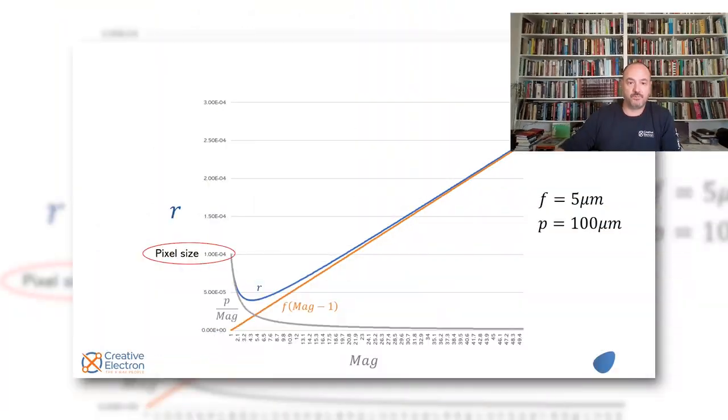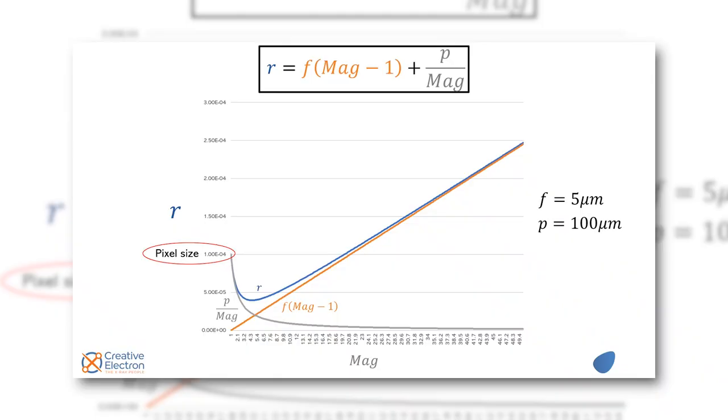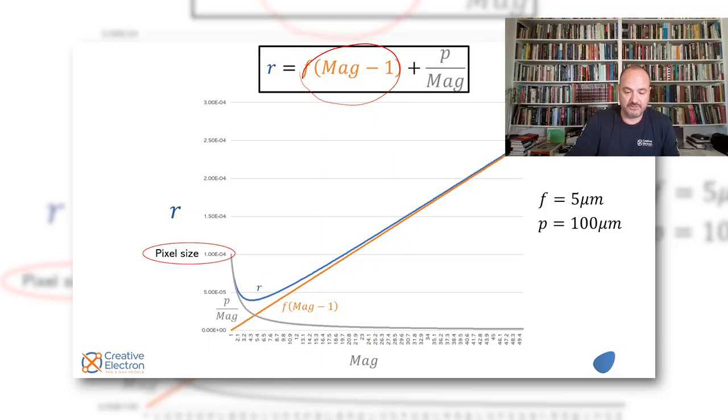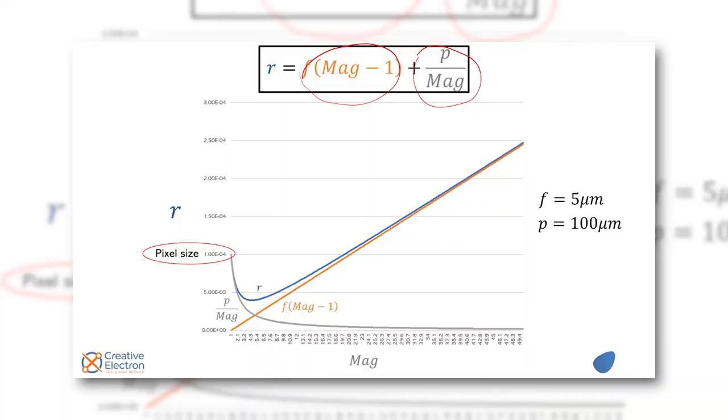So what we did here we were showing you three results at the same time. In orange you have an ideal detector where F equals mag minus one which is that straight line that we've seen before that represents a system where you have infinite pixels. On the other hand in silver we show you when you have an ideal x-ray source where resolution is driven by the size of the pixel and magnification. That's the inverse plot that we've seen before where the higher the magnification the better resolution, the smaller the number is.